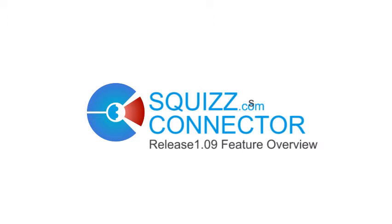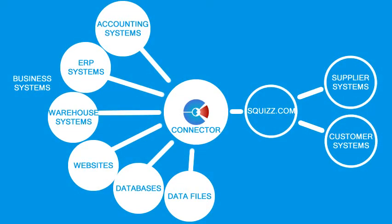If you didn't already know, the Squiz.com connector is a free piece of software developed by us that allows a business to connect any of its business systems such as accounting systems, enterprise resource planning systems, customer relationship management systems, and any other systems that involve databases or files that store data — and then to be able to transfer this data to and from the Squiz.com platform as well as the ToadX e-commerce platform. This in turn allows a business to trade effortlessly with other businesses on the platform in a highly automated fashion. In simple terms, the connector software saves and helps the business to make more money by being able to automate data transfer.